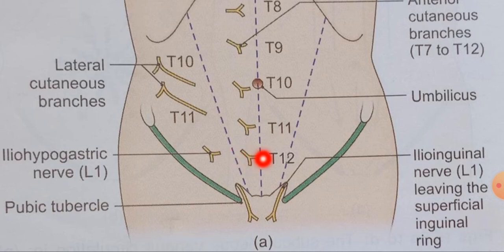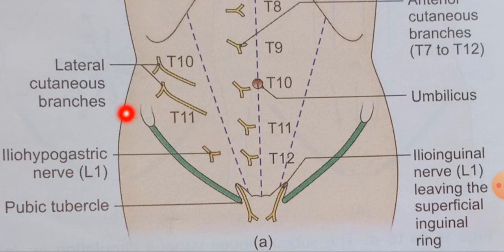The lateral cutaneous branches of the subcostal nerve, T12, and the iliohypogastric nerve descend over the iliac crest and supply the skin of the anterior superior part of the gluteal region.